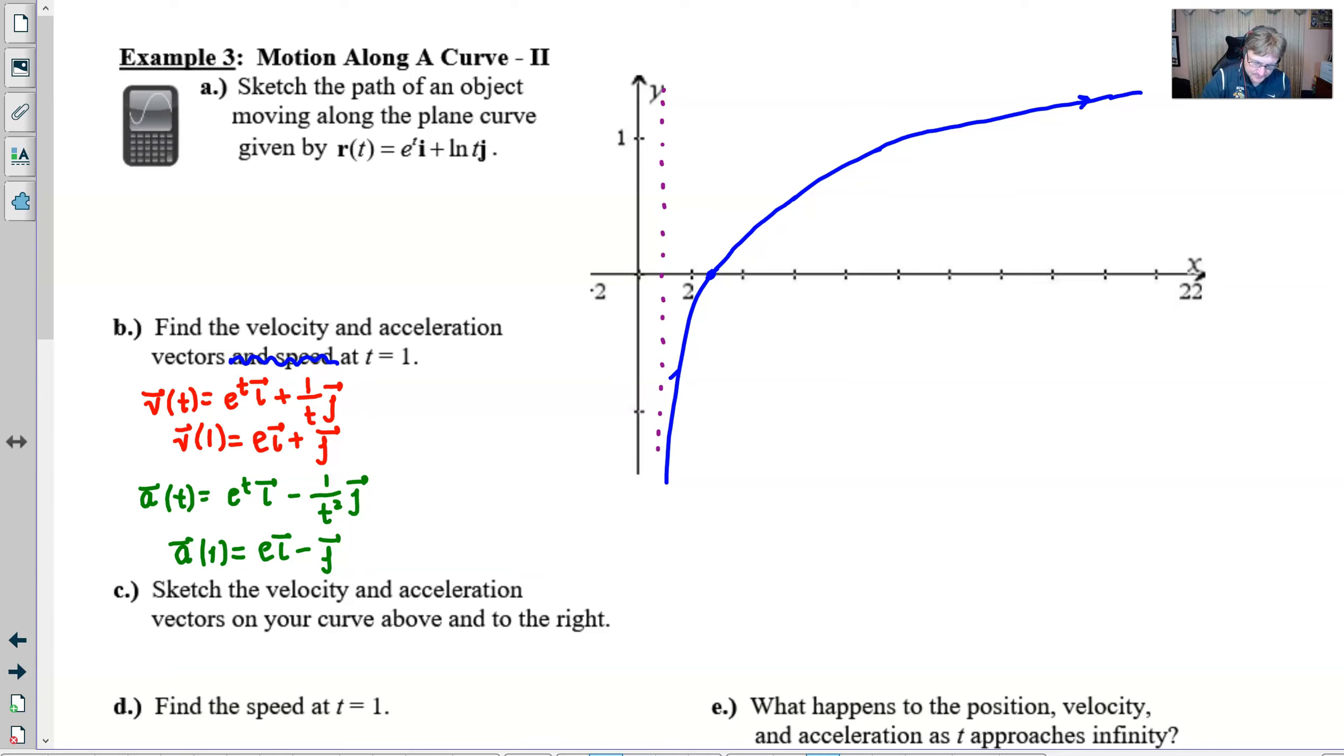Part C wants us to sketch those two vectors. This is one of the trickiest parts and has to do with the scale change. First we need to figure out where time one is. If we plugged in t equals 1, e to the first is e and natural log of one is zero. So we should be at the point e, zero, which happens to be right there.